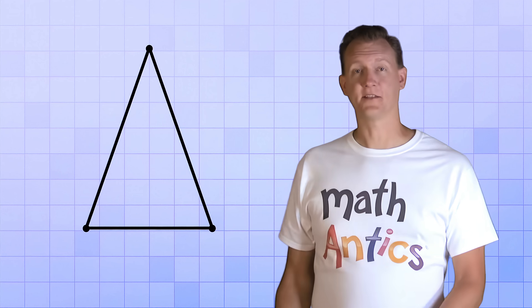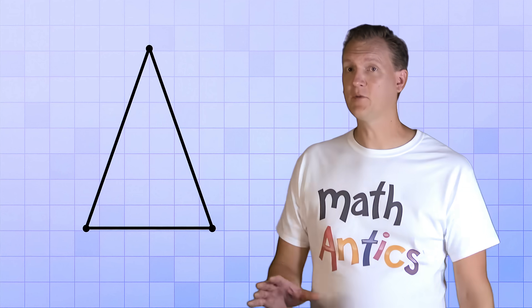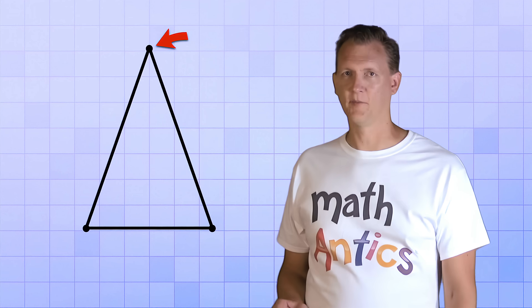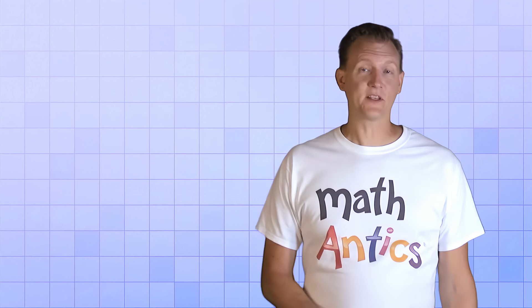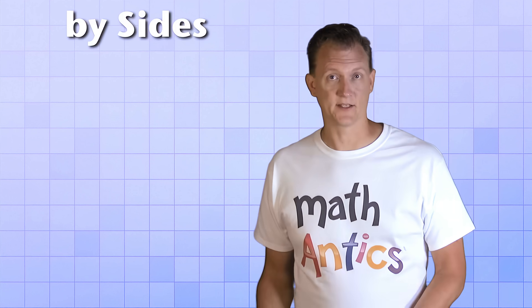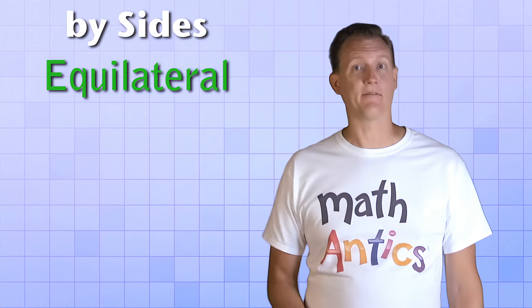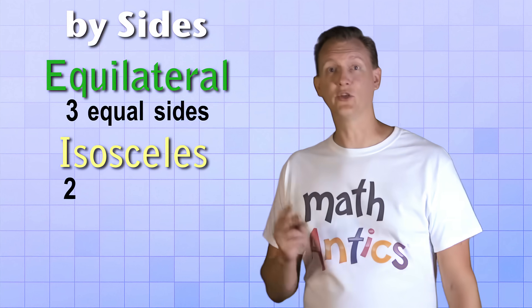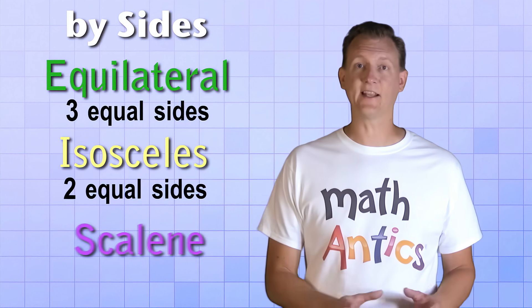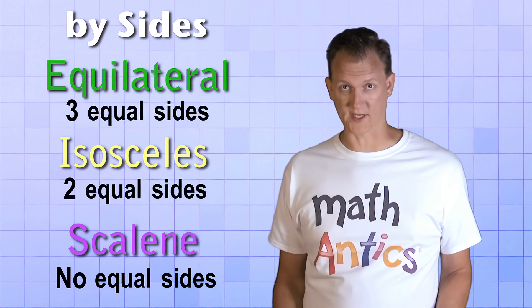Finally, to see the third possibility, let's move that same top vertex again, but this time to the left. Now all the sides are different lengths. This type of triangle is called a scalene triangle. So those are the three possibilities when classifying triangles by their sides: equilateral triangles have three equal sides, isosceles triangles have only two equal sides, and scalene triangles have no equal sides.